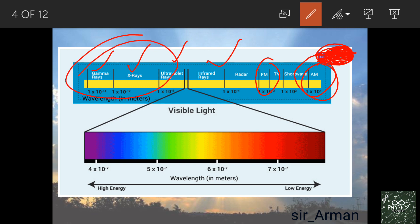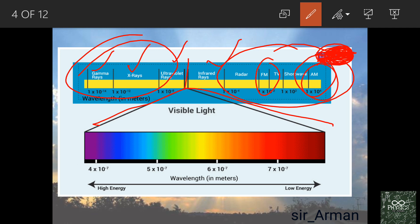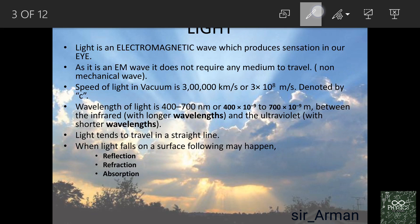X-rays, UV rays, and gamma rays are very dangerous and cannot produce any sensation in our eye. However, electromagnetic waves in the range of 400 nanometers to 700 nanometers — from violet to red — can produce sensation in our eye. Therefore, the wavelength of light is defined as the range from 400 nm to 700 nm.